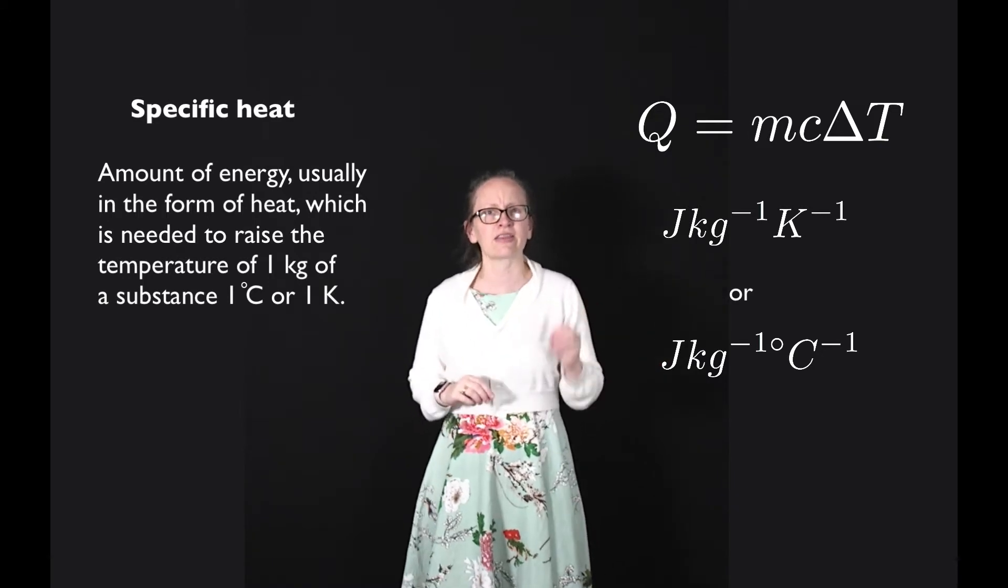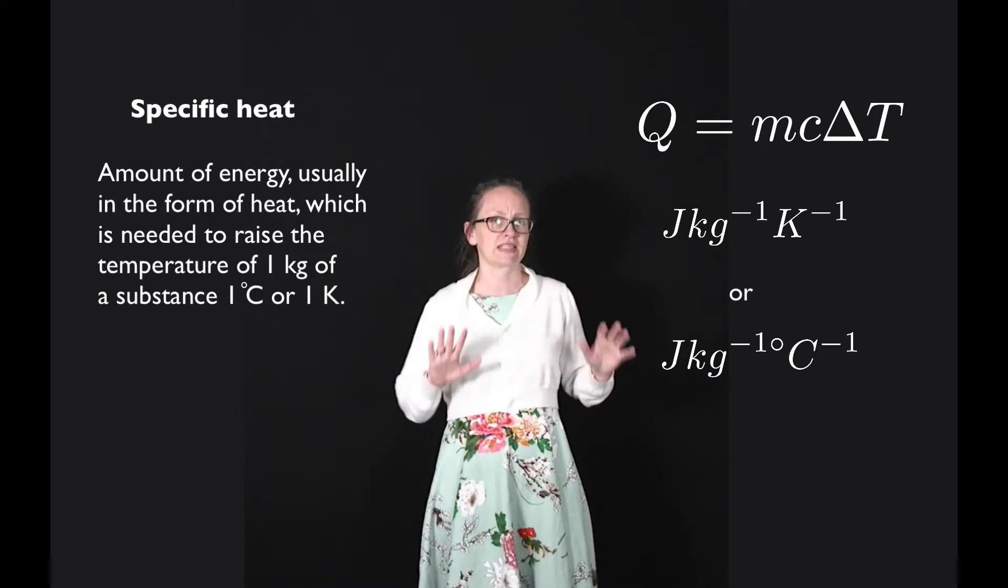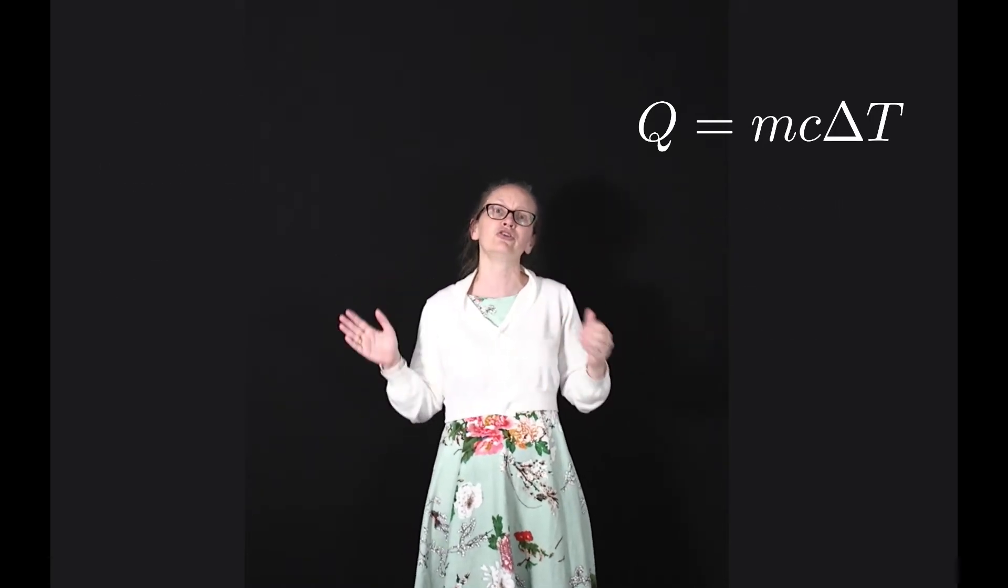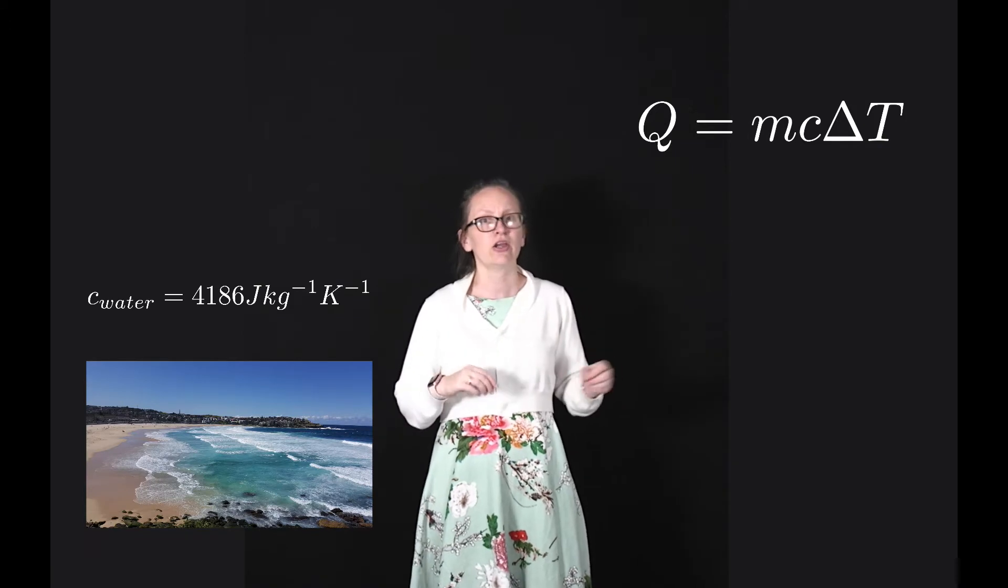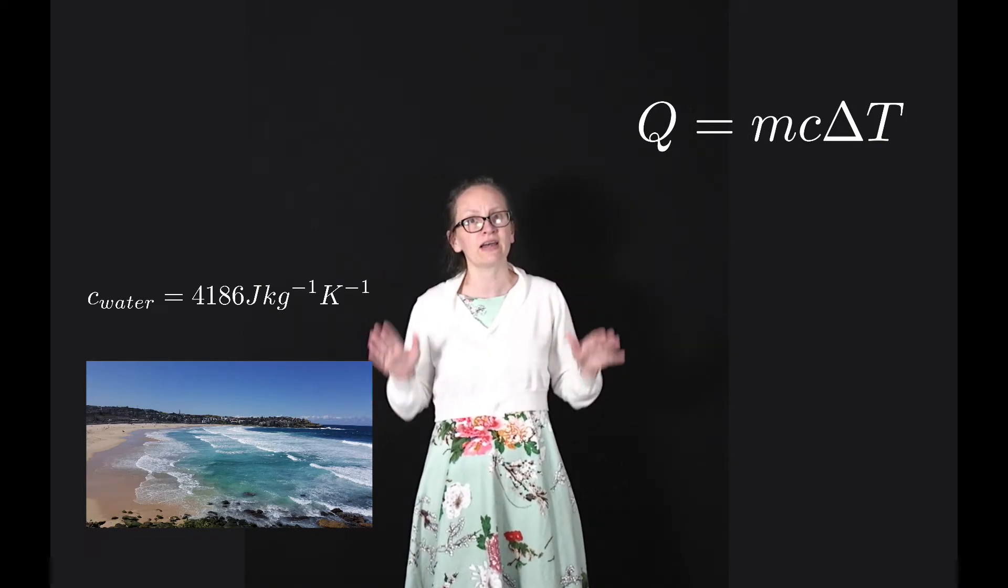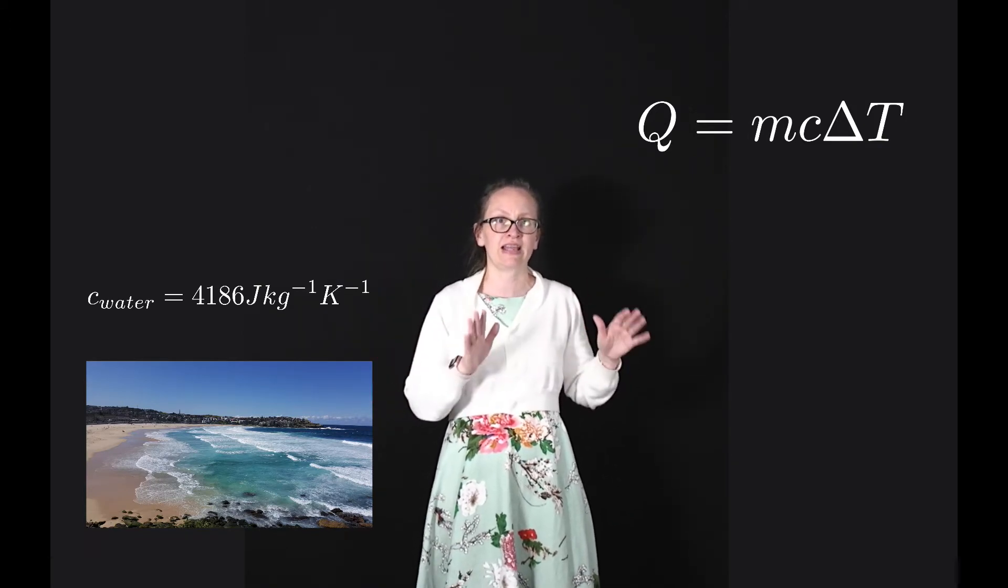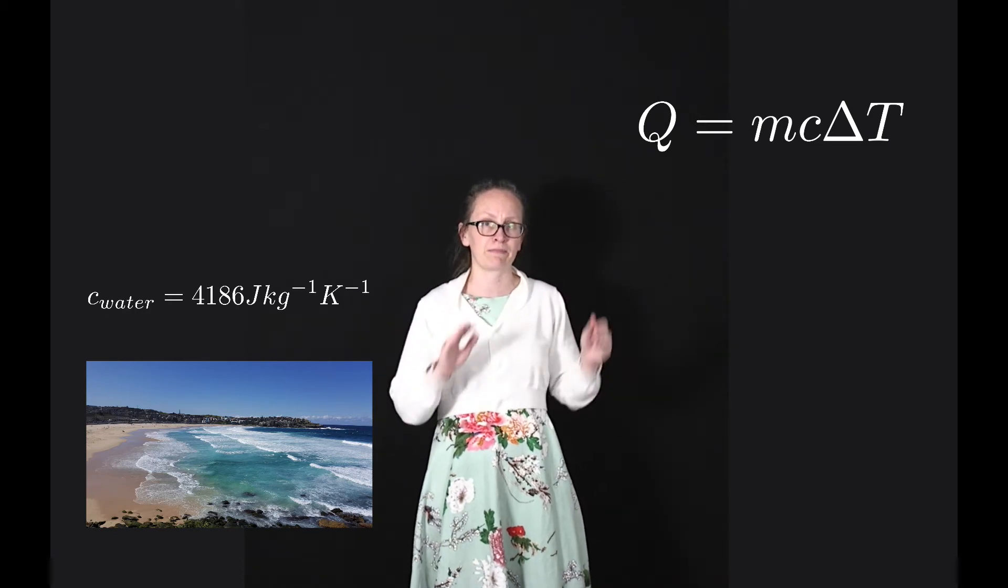Let's consider the specific heat of some common substances. Water is a very special substance with an unusually high specific heat. The specific heat of water is 4186 joules per kilogram per kelvin.